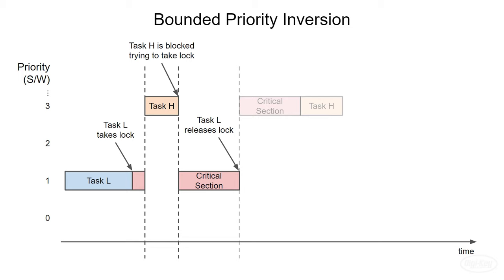When it's finished with the critical section, it will release the lock, perform any other actions needed, and then yield to task L. This is known as bounded priority inversion, as the wait time for task H is bounded by the length of time task L is inside the critical section.